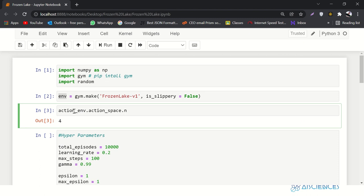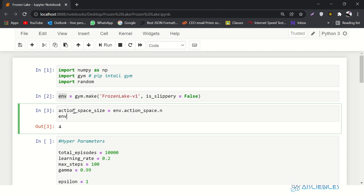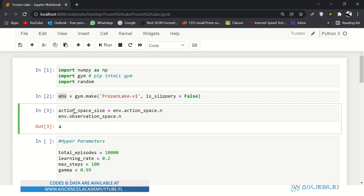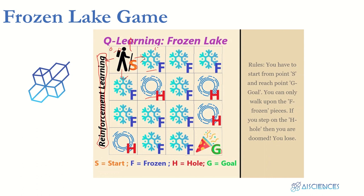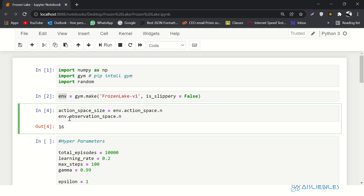There is another variable called observation_space which shows the number of states in the environment. A state is the configuration of the grid — if our agent moves from position zero-zero to zero-one, that will be another state. On this four-by-four grid the maximum number of states is 16, so observation_space says 16. Let me store it in a variable called state_space_size.